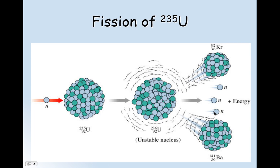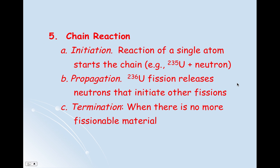As those two neutrons that were just given off interact with two more nuclei, something starts in motion — that's what we call a chain reaction. A chain reaction has three different steps: the initiation, which is the reaction of a single atom starting the chain — usually a uranium-235 nucleus being bombarded by one neutron. The propagation is when this uranium-236 nucleus, because of the addition of that neutron, releases two additional neutrons as it splits in two. This continues to propagate until we reach termination, which is when there is no more fissionable material left.